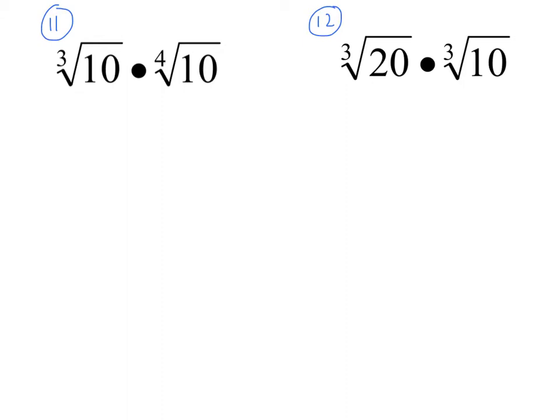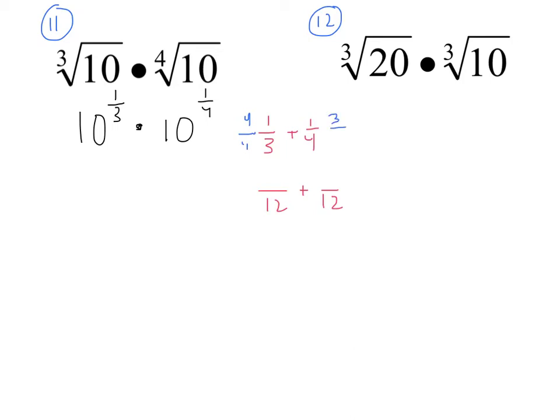I want you to do problems eleven and twelve on your own. Think about whether you have the same type of radicals and what difference that makes. For number eleven, because I have different types of radicals, I rewrite as 10 to the one-third times 10 to the one-fourth, then add exponents: one-third plus one-fourth. Getting a common denominator of 12 gives four-twelfths plus three-twelfths, which is seven-twelfths. So the answer is 10 raised to the seven-twelfths power.